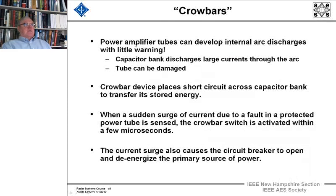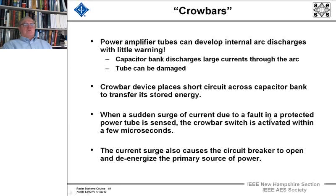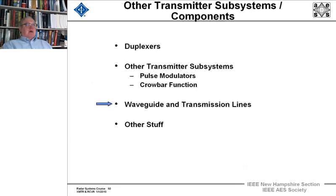Power amplifier tubes can develop internal arc discharges with little warning, and the capacitor bank can discharge large currents through the arc, seriously damaging the tube. To prevent this, a crowbar device places a short circuit across the capacitor bank to transfer its stored energy. When a sudden surge of current due to a fault in a protected power tube is sensed, in microseconds the crowbar switch is activated, and the current surge also causes the circuit breaker to open, de-energizing the primary source of power — a safety switch to prevent destroying a very expensive power amplifier tube.